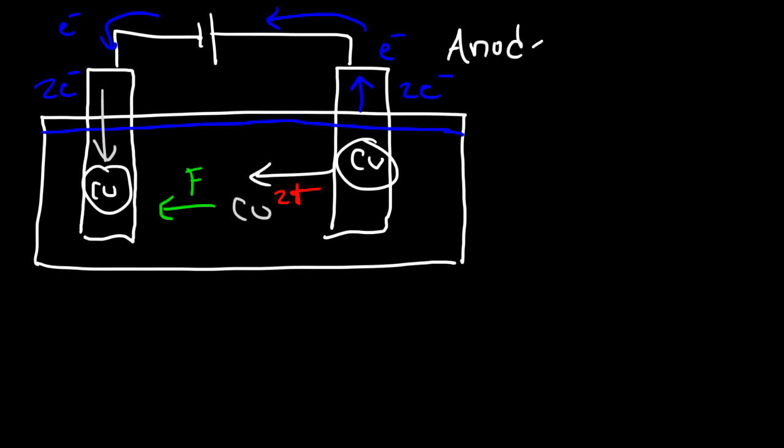So it's going to deposit itself on the cathode. So the anode is losing mass - the quantity of copper is decreasing - and the cathode is gaining mass. So the net effect is we're taking copper atoms from the anode and transferring it to the cathode. And so that's the basic idea behind electroplating - you can take the metal of one substance and deposit it on another substance.